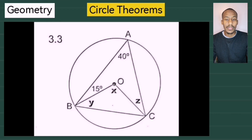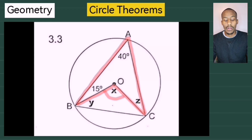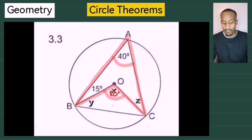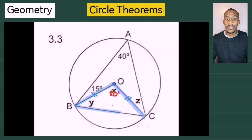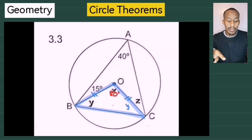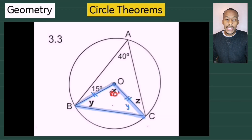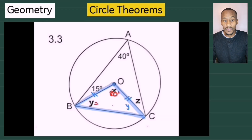Angle X is at the center of the circle. We know that the angle at the center is twice the angle at the circumference, so since angle A is 40 degrees, angle X is 80 degrees. To calculate Y, OB and OC are radii, which creates an isosceles triangle. So the angle at C also equals Y. Using the interior angles of a triangle summing to 180, Y equals 180 minus 80 divided by 2, giving us 50 degrees.